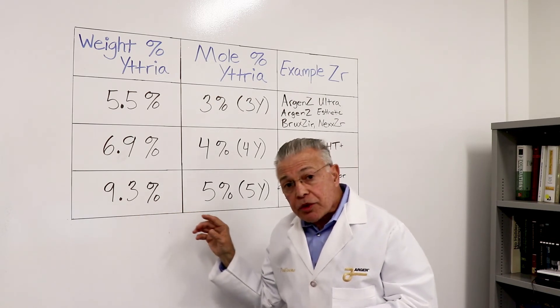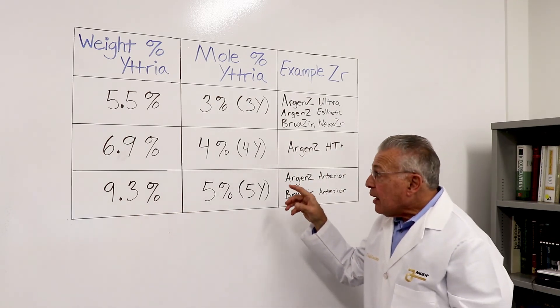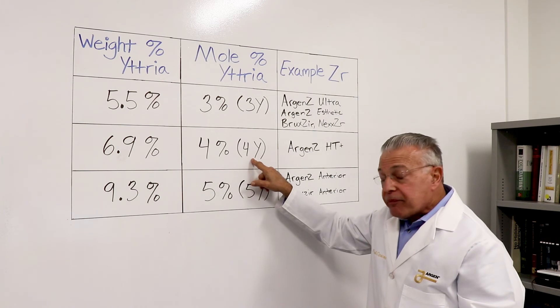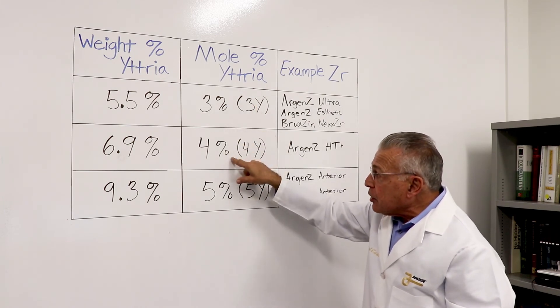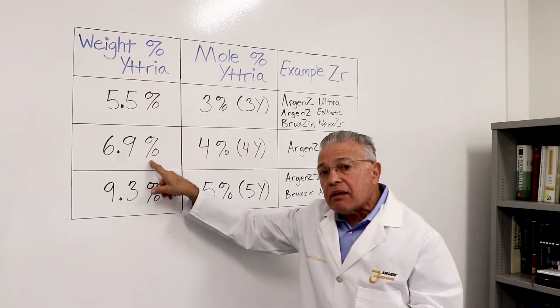Now our new zirconia, the HD+, is a 4Y zirconia. That means 4 mole percent zirconia, which is about 6.9 weight percent.